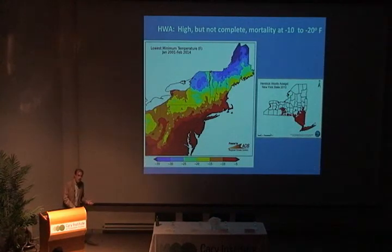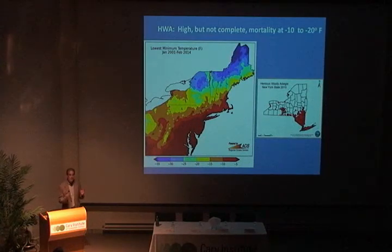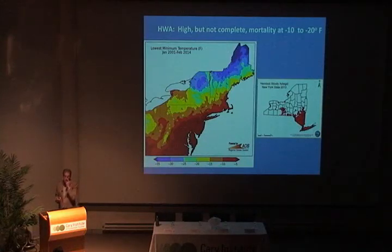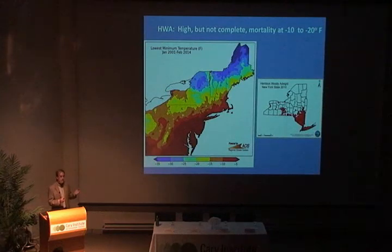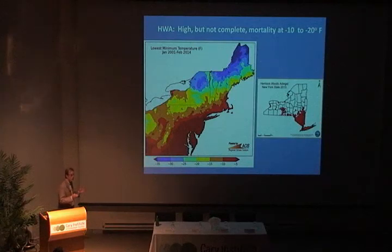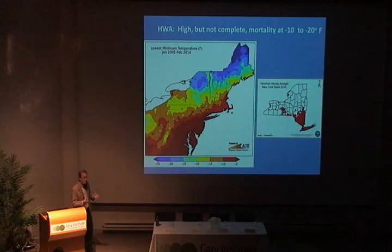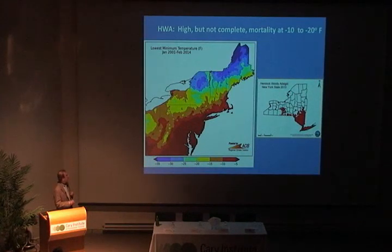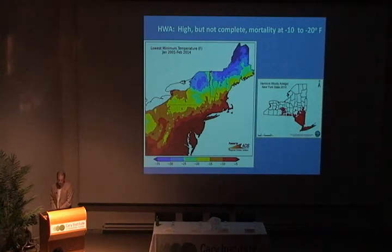One thing that's happening is the insect is growing more cold tolerant as it moves north — it's evolving. Interestingly, the insect is all asexual reproduction, so essentially all hemlock woolly adelgid in the eastern U.S. are one big clone. Normally you don't think about evolution in a clone, but there's enough mutation in the population to allow this. We're seeing evolution toward more cold tolerance, which does not bode well for hemlocks to the north of us.